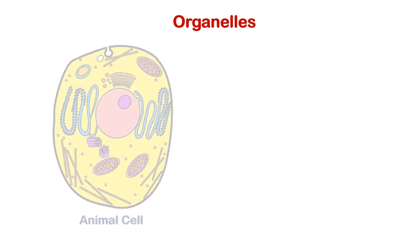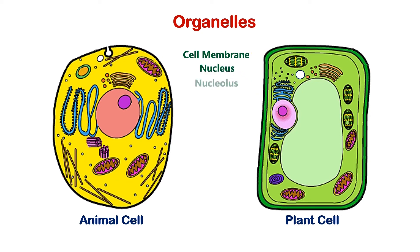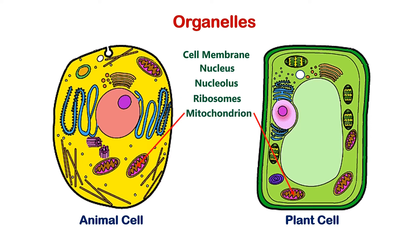The organelles present in both animal and plant cells are cell membrane, nucleus, nucleolus, ribosomes, mitochondrion, and Golgi bodies.